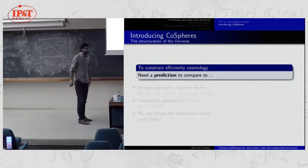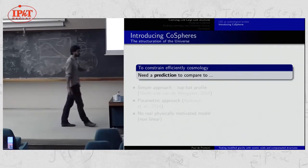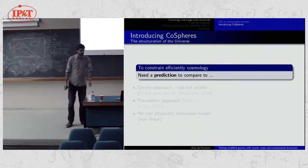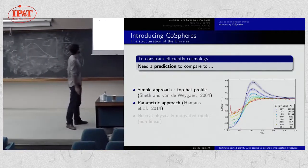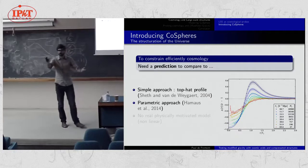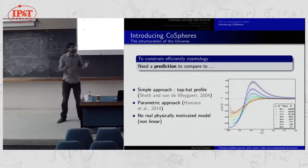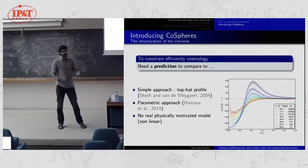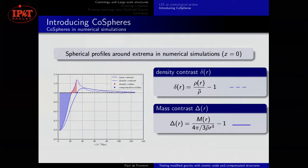The problem is that if you want to constrain cosmology efficiently, we need something to compare to — this is the basis of physics. There have been many approaches to model cosmic voids: simple top-hat profiles, parametric approaches using numerical simulations, and others like log-normal. But there is not really a physically motivated model that makes predictions on the size, shape, and evolution of these regions.